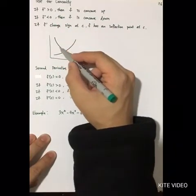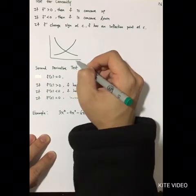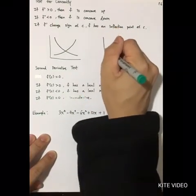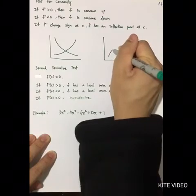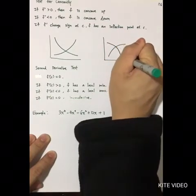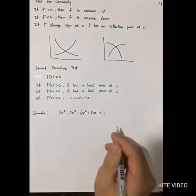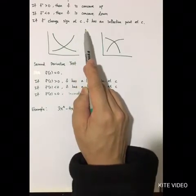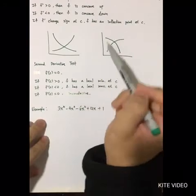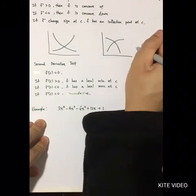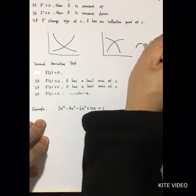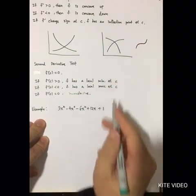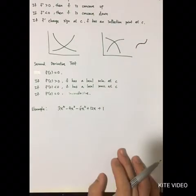If f double prime is less than zero, the function is concave down, meaning the slope is decreasing — the slope becomes steeper and steeper. If f double prime changes sign, this is an inflection point. An inflection point is where the function is increasing, reaches a flat region, then increases again.